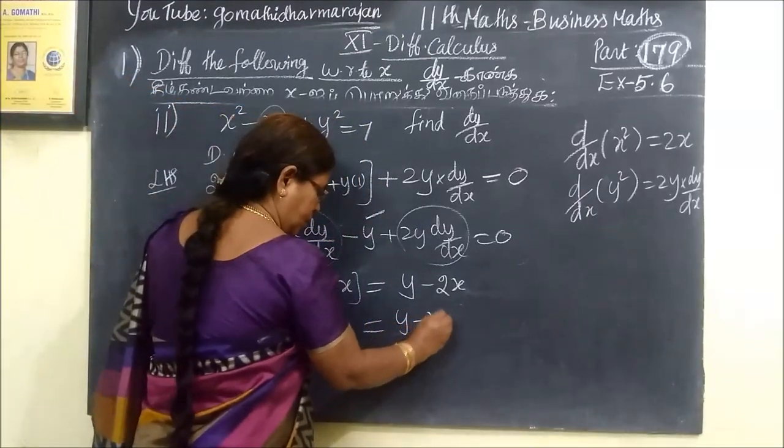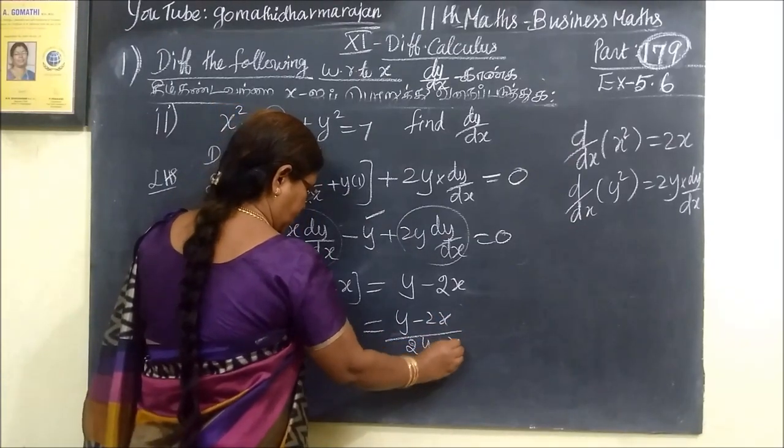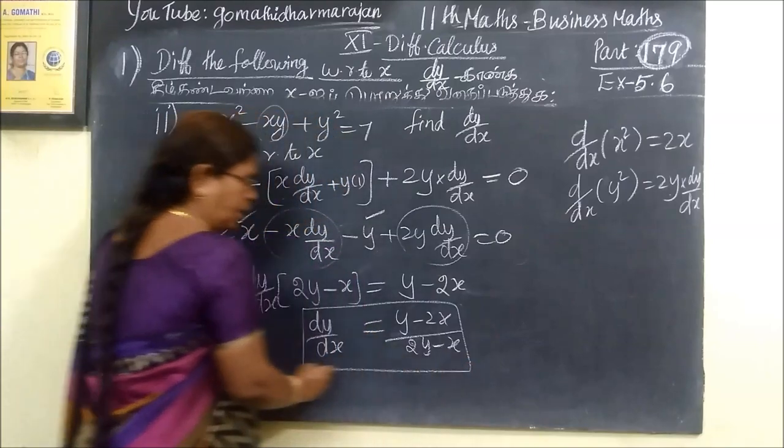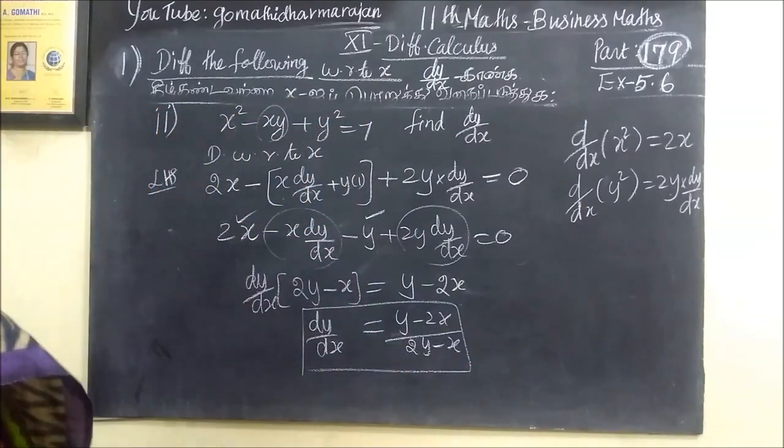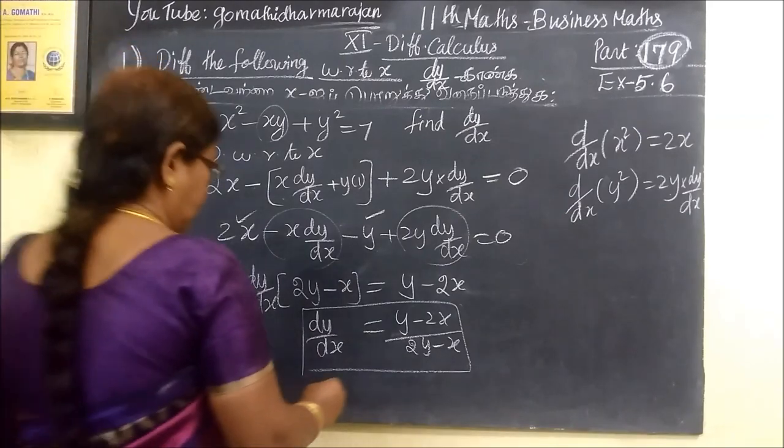Here we write y minus 2x by 2y minus x. I think this is the answer for this. So divide by y minus 2x, 2x minus y. This one is correct.